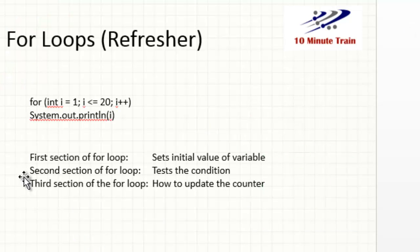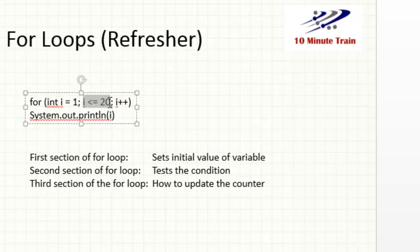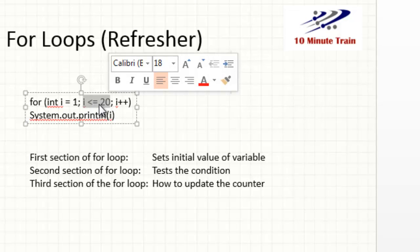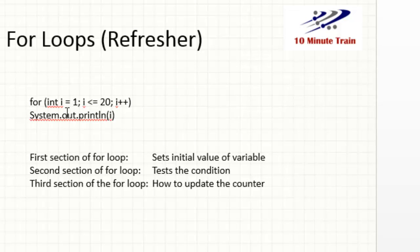As a refresher, I wanted to quickly go over the for loop which we covered in tutorial number four. How the for loop works: you set the initial value of the variable — in this case we're setting i to equal one — then this is the condition in the second section of the statement: i is less than or equal to twenty, meaning as long as i is less than or equal to twenty, we've met the condition. The third section is how we update the counter — we increment i by one, which is what i++ does — and then we print out the number.